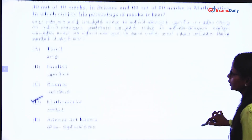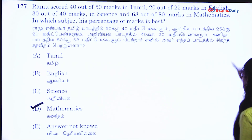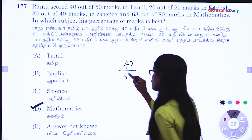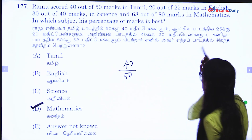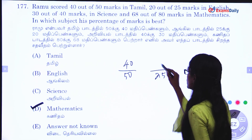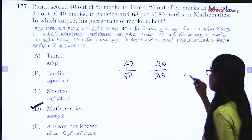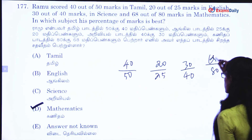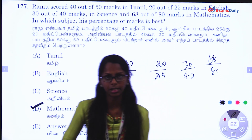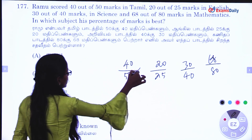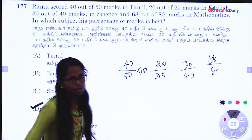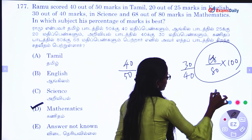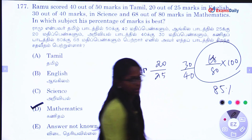Next question. One student has marks: 50 out of 40 in one subject which is Tamil, and 25 out of 20 in one subject, and 40 out of 30 in one subject, and 80 out of 68 in one subject. Find the percentage — into 100. You can do it: 80%. But you can do it.